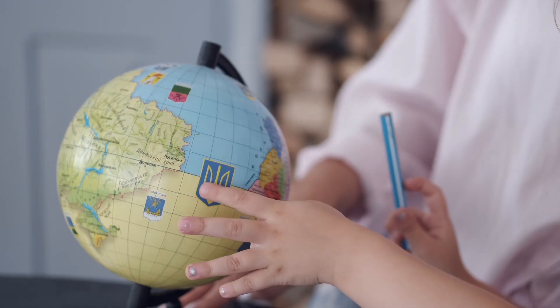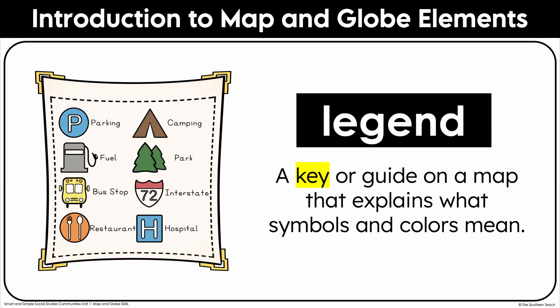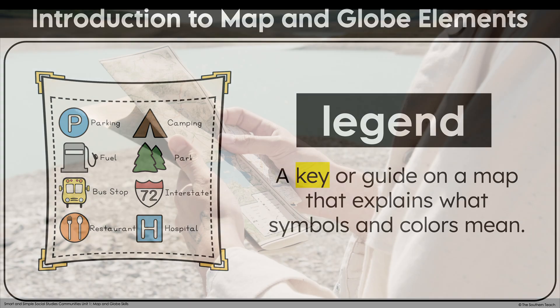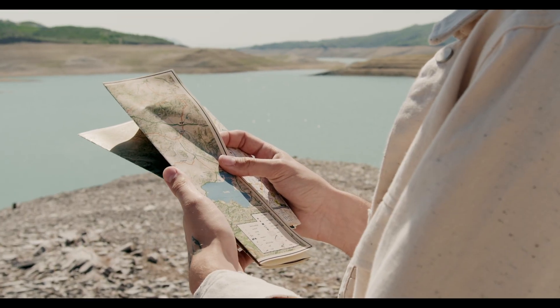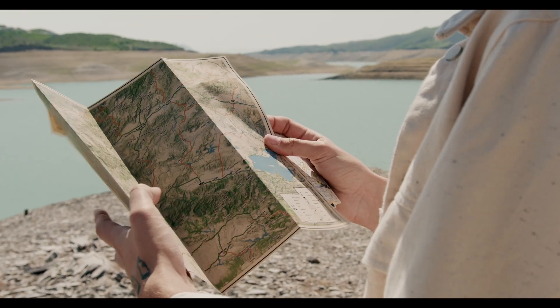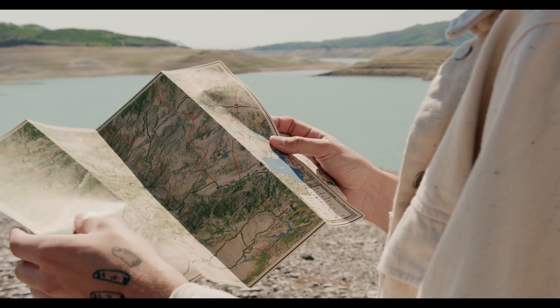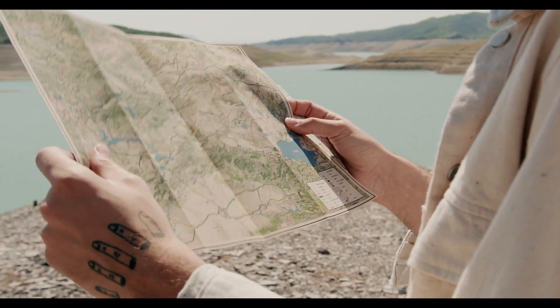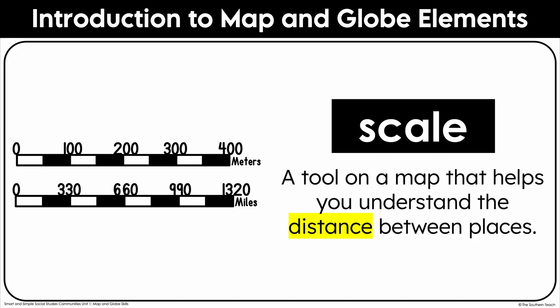A legend, also called a key, explains the symbols and colors used on a map. Maps use symbols to represent things like mountains, lakes, roads, or even airports.